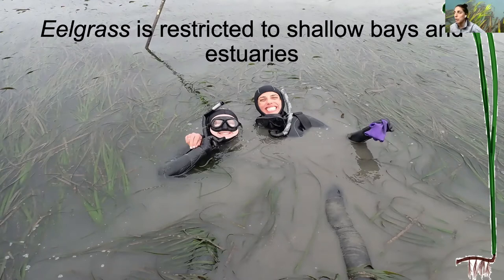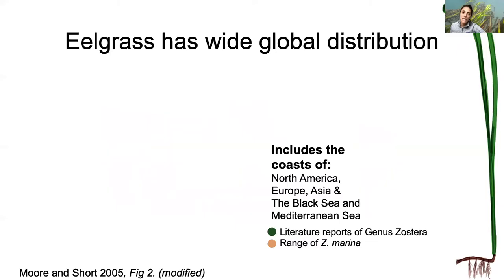This is a picture of me and one of my undergrads at one of our restoration plots, which I can talk about later if there are questions. Eelgrass has a pretty wide global distribution — it's the dominant seagrass species in the northern hemisphere. I'm going to show you a map modified from Moring and Short from 2005.